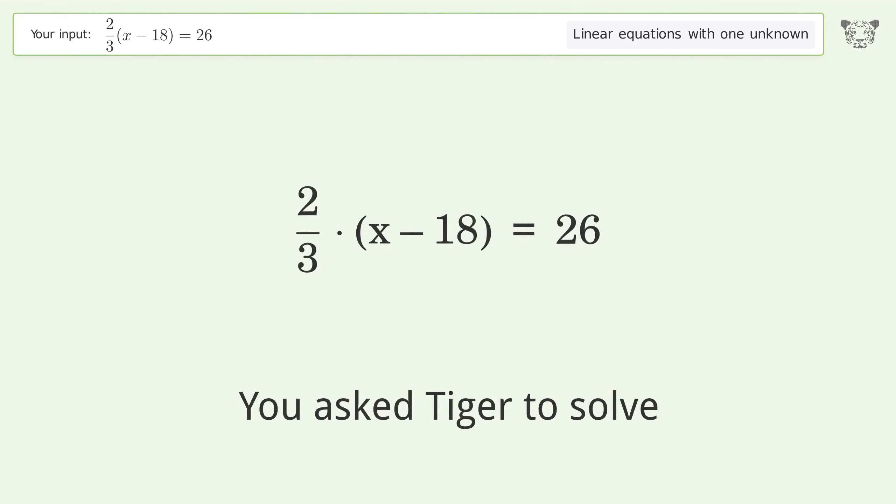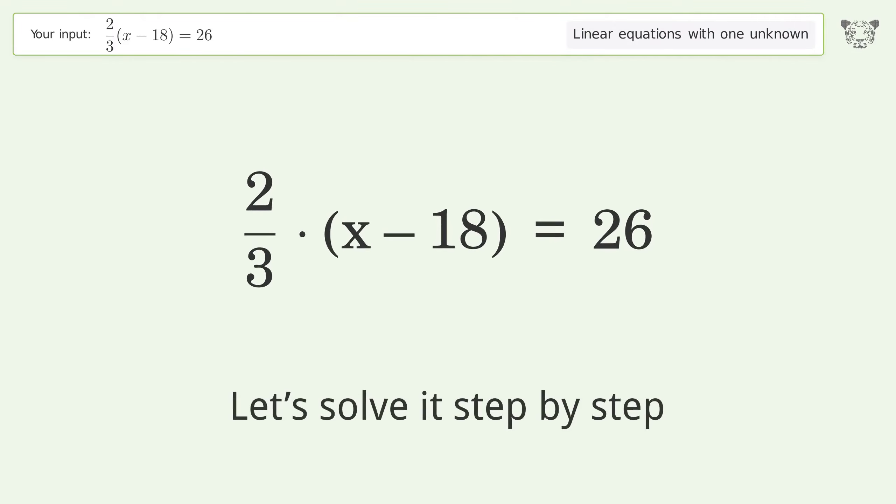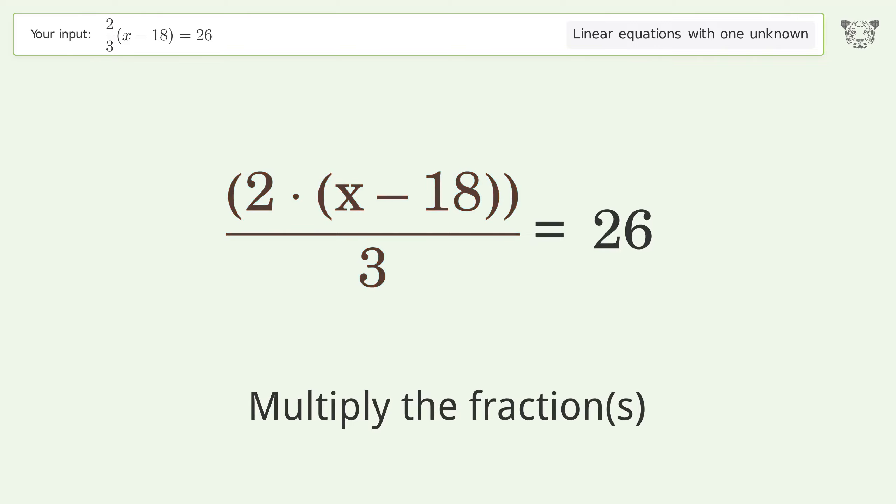You asked Tiger to solve this. This deals with linear equations with one unknown. The final result is x equals 57. Let's solve it step by step. Simplify the expression, multiply the fractions, expand the parentheses.